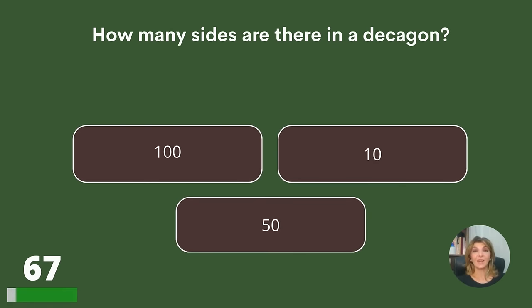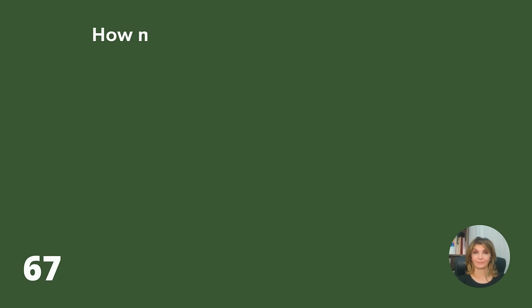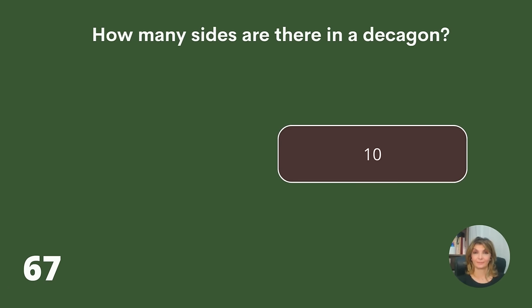How many sides are there in a decagon? One hundred, ten, or fifty? Answer: Ten.